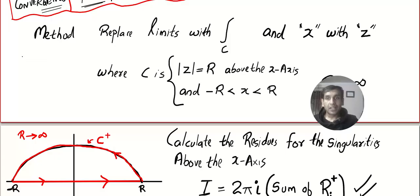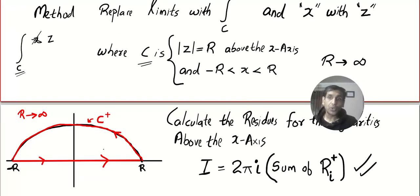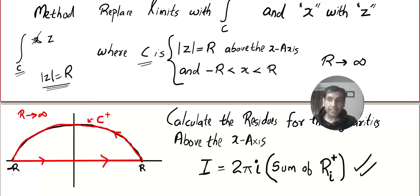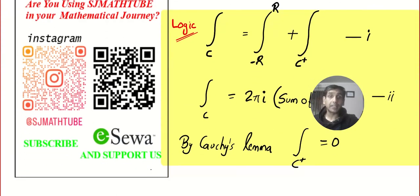The method is pretty simple. What you do is delete the given integral, write the integral over C, and replace every x with the letter z. C is actually the contour — it is a semicircle, consisting of a part of the circle |z| = R above the x-axis, and the x-axis from minus R to plus R.